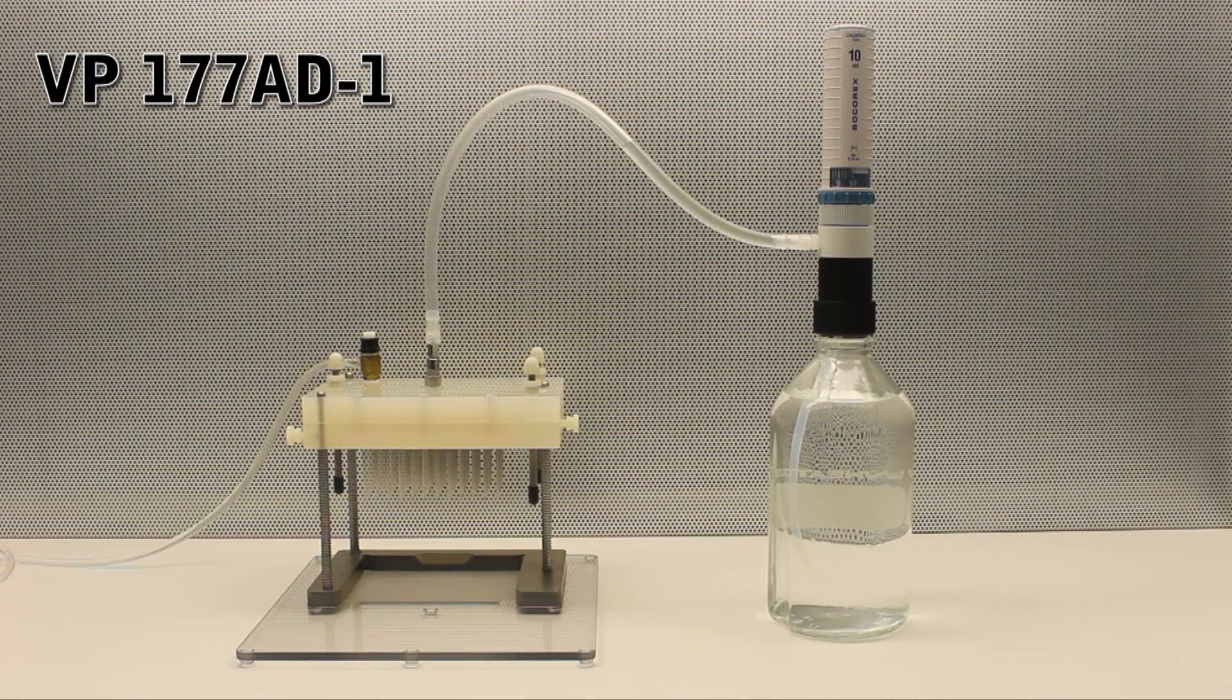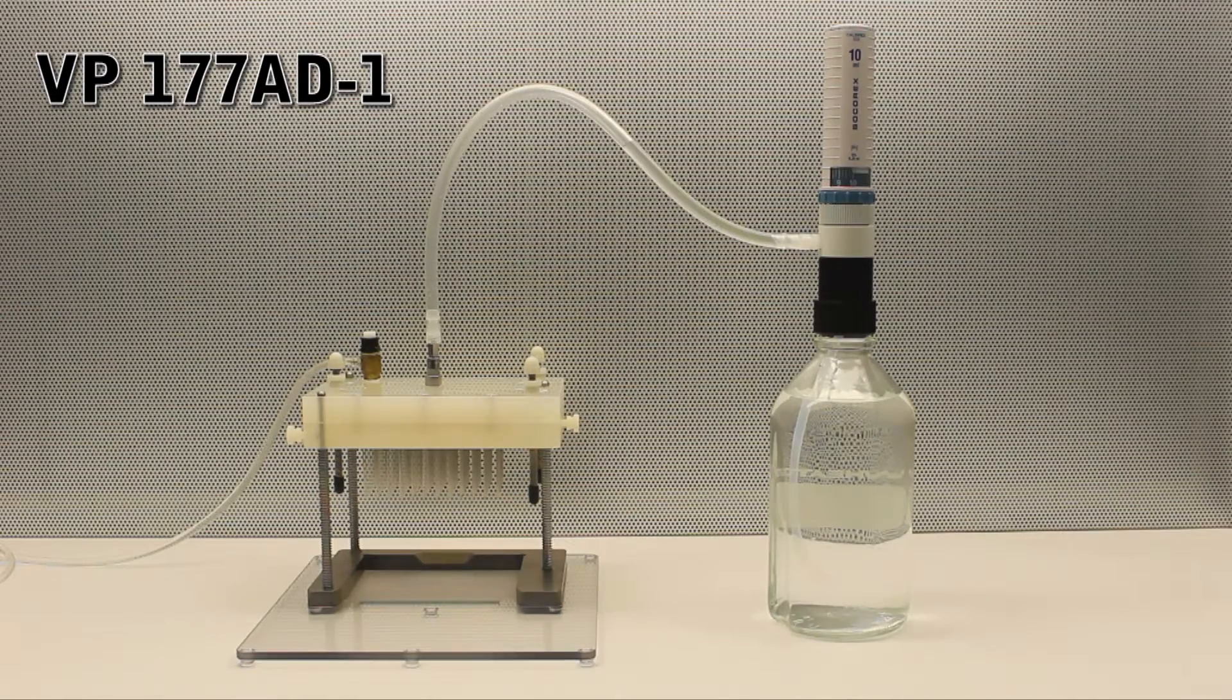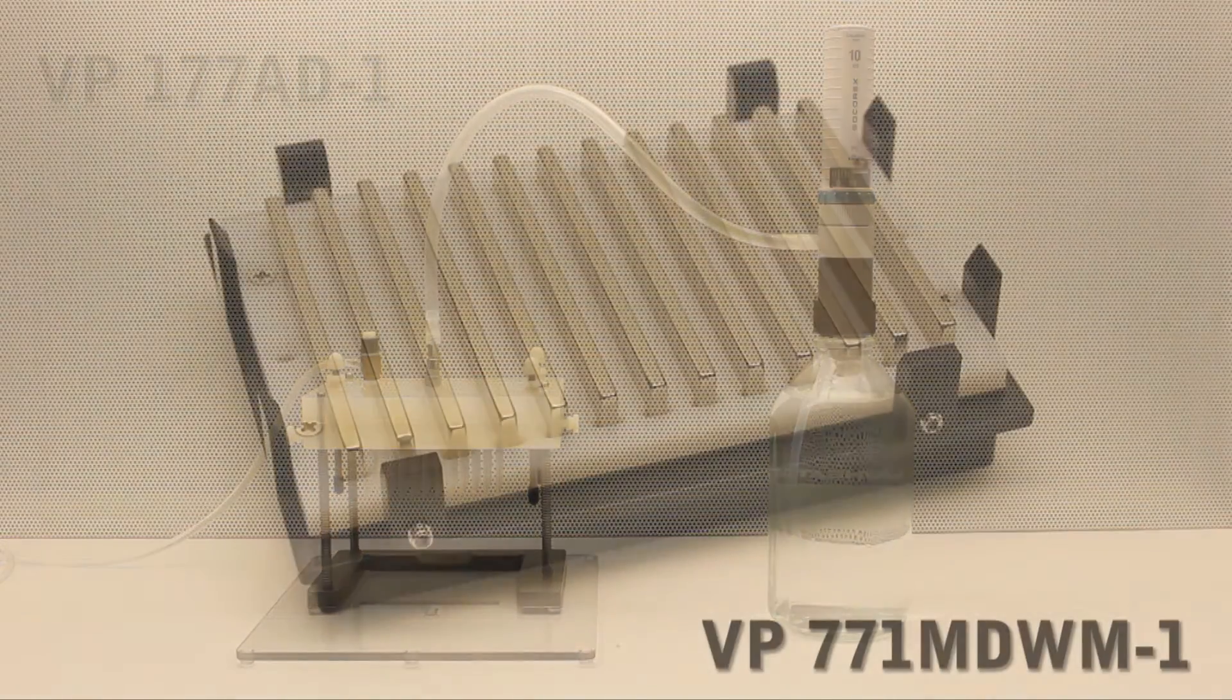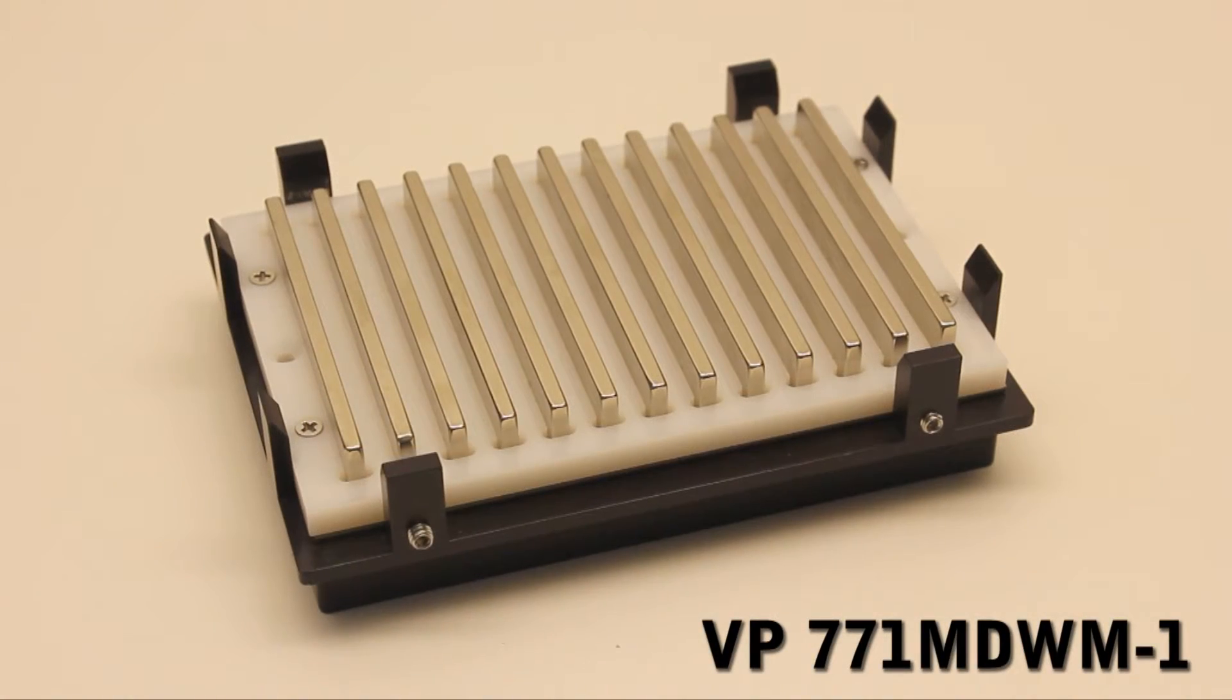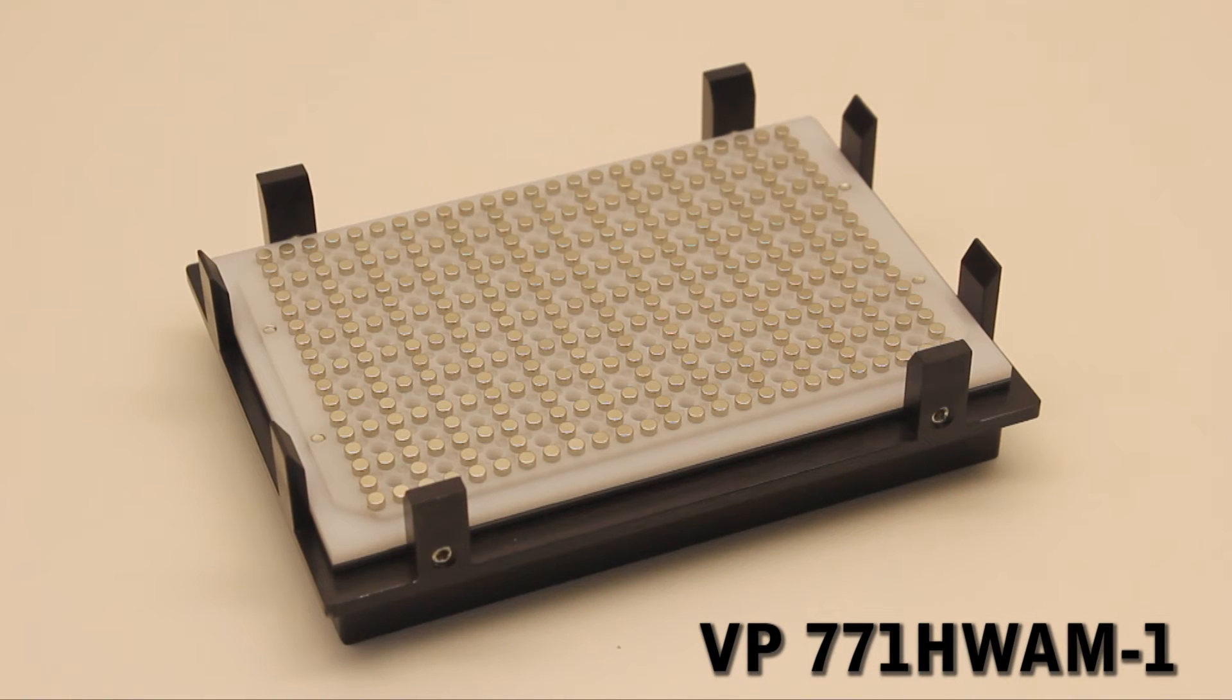In this example, we will demonstrate magnetic bead washing in both deep well and standard 96-well microplates. This is VMP's magnetic separation block for deep well plates and this one is for standard well plates.